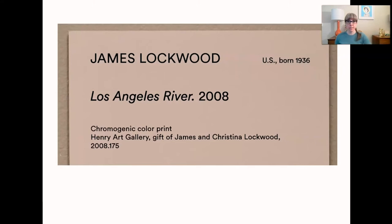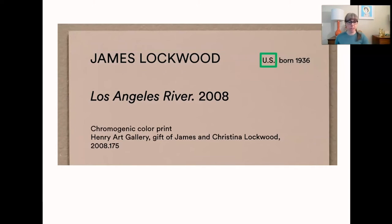For instance, we have the artist's name - he's James Lockwood. Then it tells us that he's from the United States of America, and we know that he was born in 1936. If he lived a long time ago, then there would be a birth date and a death date - so like 1836 to 1904, something like that.